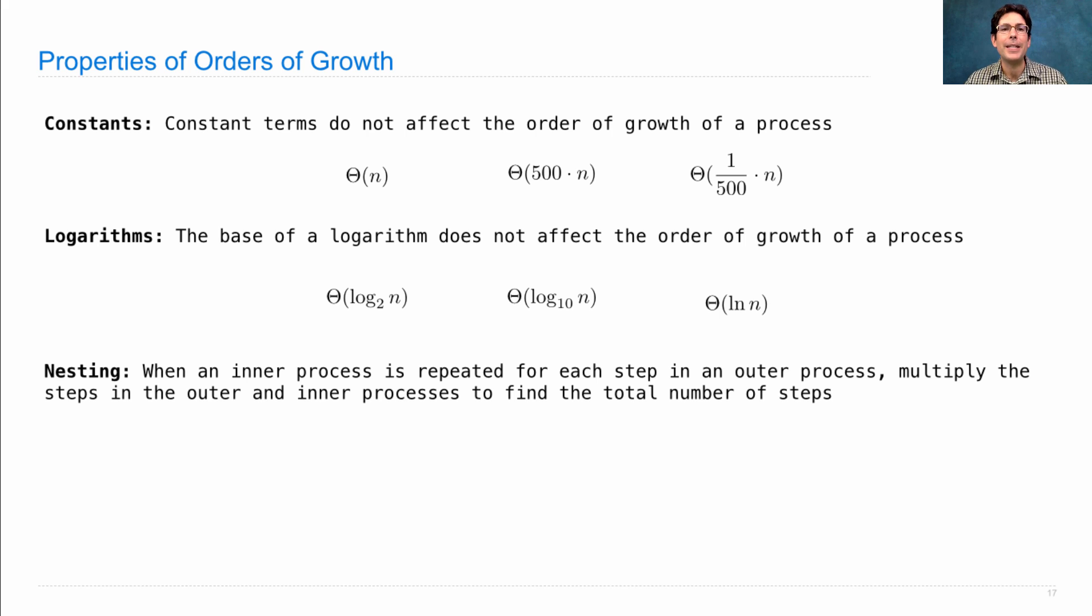Finally, you need to know what to do when you have nested processes. So if some inner process is repeated for each step in an outer process, you need to multiply the steps in the outer and inner processes to find the total number of steps or operations.